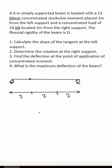At the first division point, we have our concentrated moment of 12 kNm acting clockwise. At the point 2 meters from the right support, there is a concentrated load of 24 kN. We now have our complete figure.